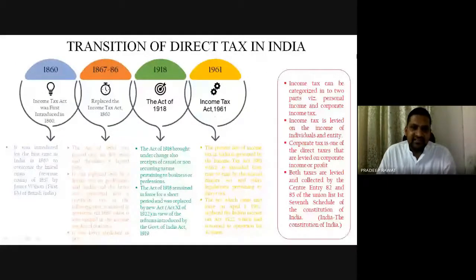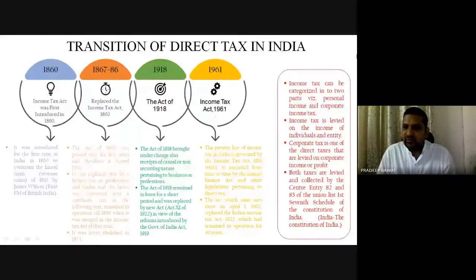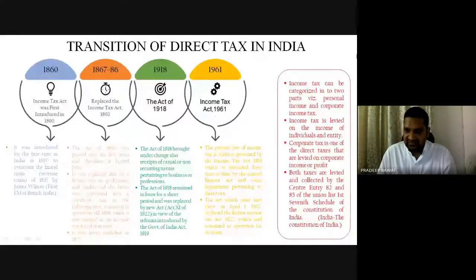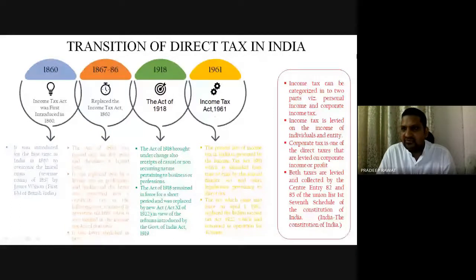Regarding the transition of direct tax in India: direct tax was first introduced — by direct tax I mean income tax, which can be broadly divided into individual tax and corporate tax. Individual tax is on the income of an individual, whereas corporate tax is on the income of a company. There are also different rates for partnerships, private limited companies, public companies, and LLPs. It started in 1860, was replaced in 1867, evolved through 1886, a new act came in 1918, and what you see today is formally the Income Tax Act 1961.